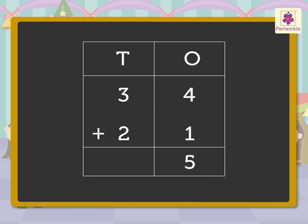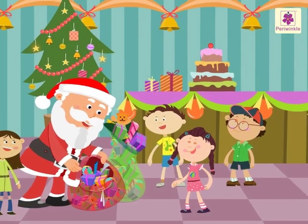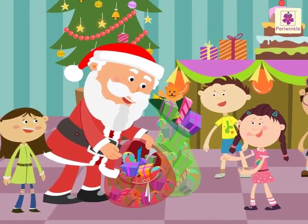Write it also in the 1s column. Now, add the numbers in the 10s column, 3 and 2. Again, we get 5, which we write in the 10s column. Hence, we get the number 55. We say the sum of 34 and 21 is 55. There are 55 gifts in all.